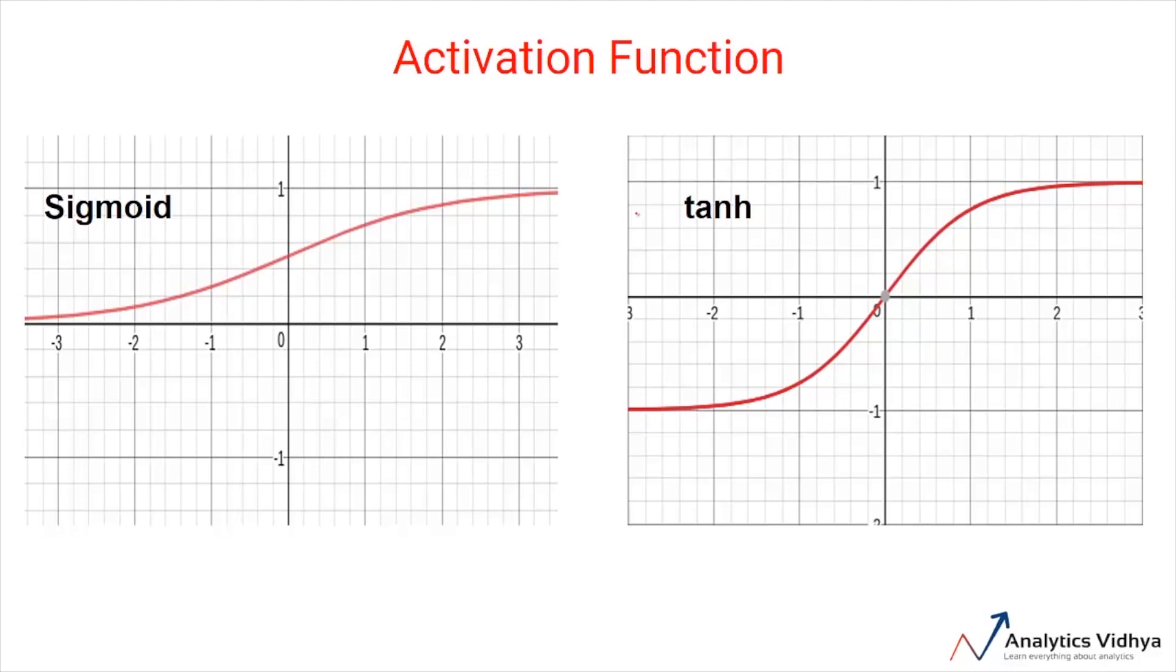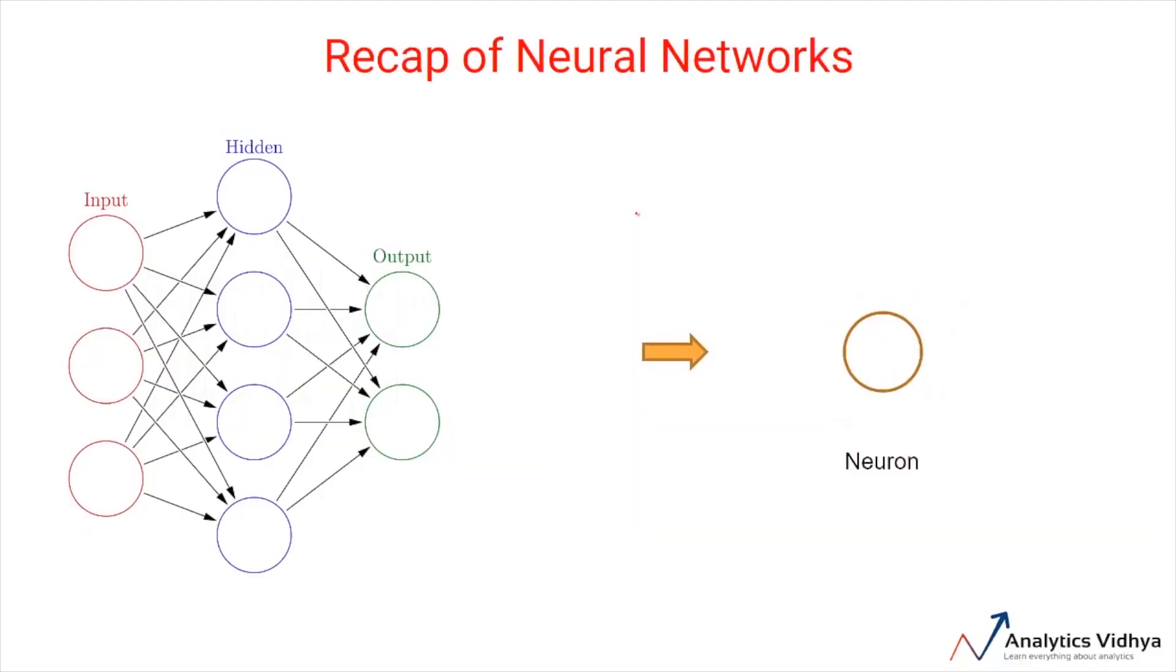Let's recap what we have discussed so far. We know that neural network is composed of different types of layers stacked together. And each of these layers is composed of individual units called neurons. Every neuron has three properties. First is bias. Bias is the negative threshold after which you want neuron to fire.